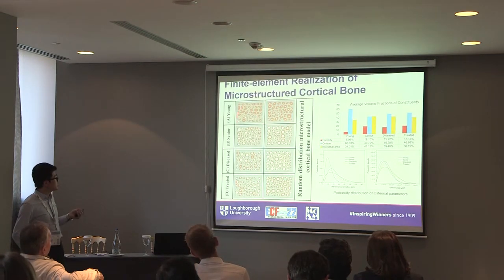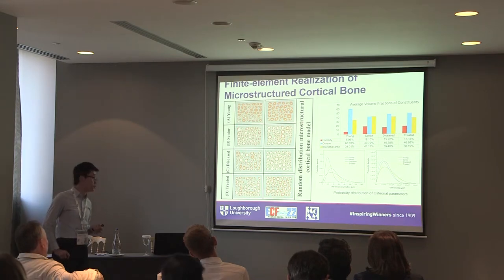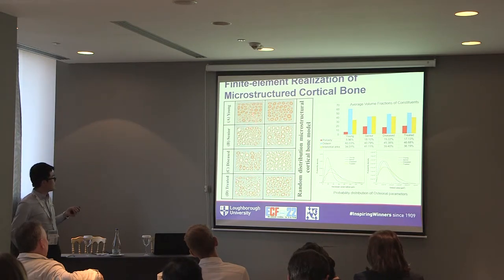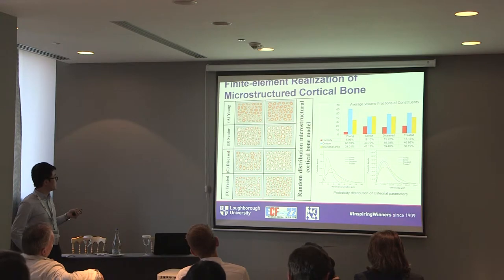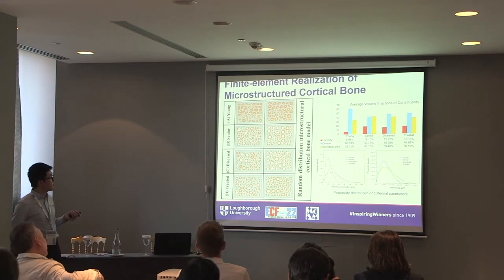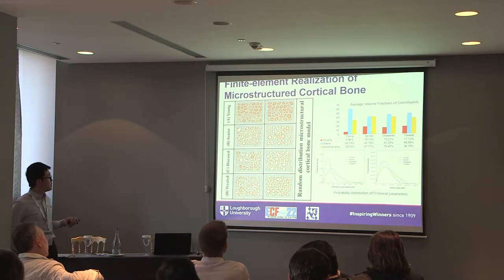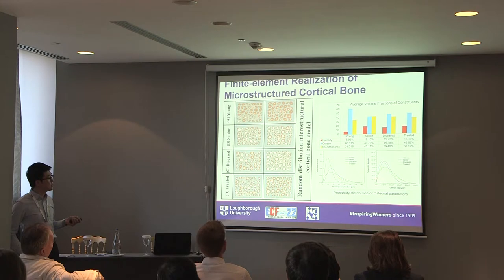We produced two sets of statistically realized computational models for each of the four groups. As you can see, we see much less porosity in the young groups compared to the senior and disease groups. The volume fractions of each constituent closely follow what we measured experimentally, and the morphological characters of the Haversian canals as well as osteon areas are completely different between the young group and the disease and senior groups.